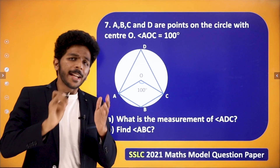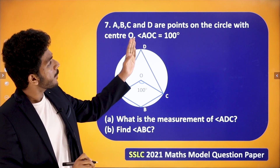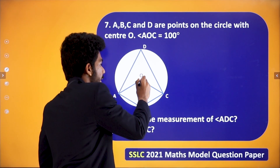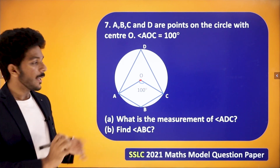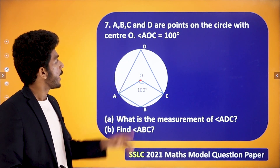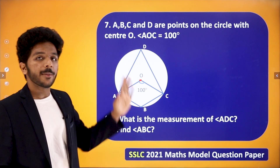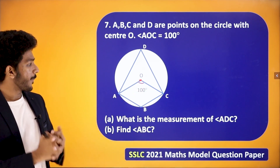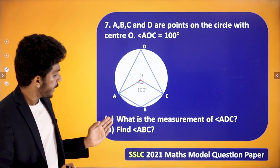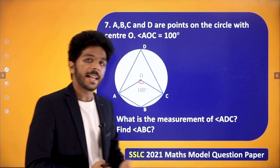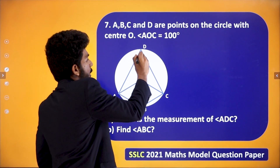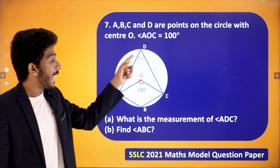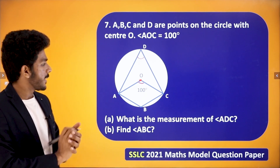Now the next question: ABCD are points on a circle with center O. AOC is equal to 100 degrees — this central angle is 100 degrees. What is the measurement of angle ADC?